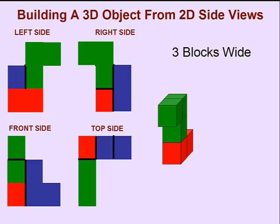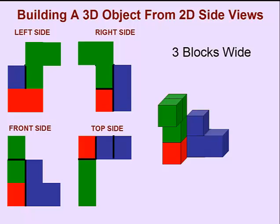looking at the right side, they have to be at the back. Looking at the front side, we know there must be another blue block on top of that middle blue block.